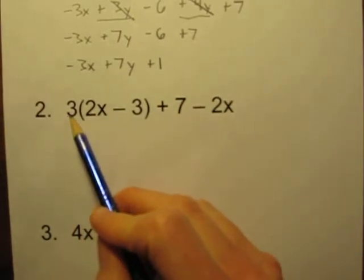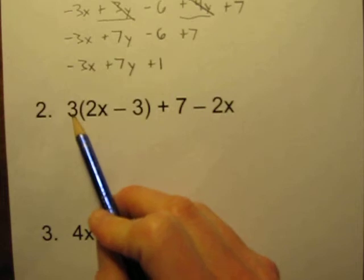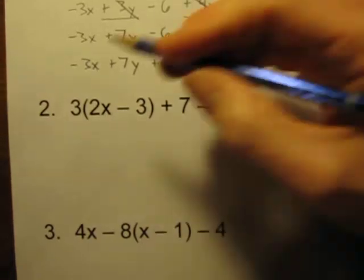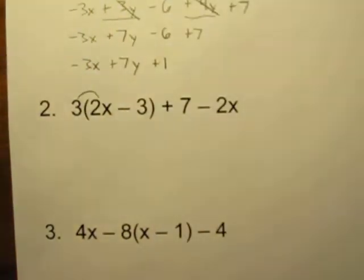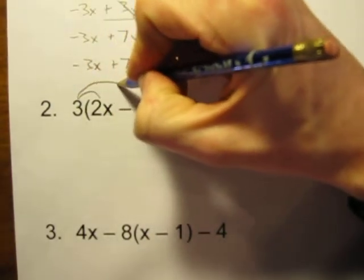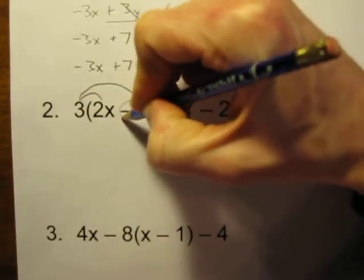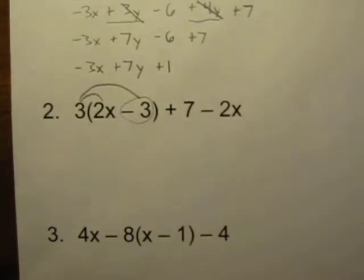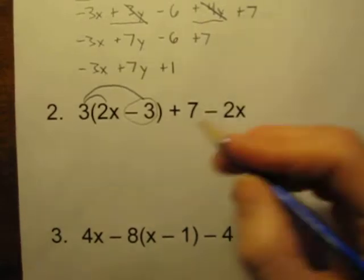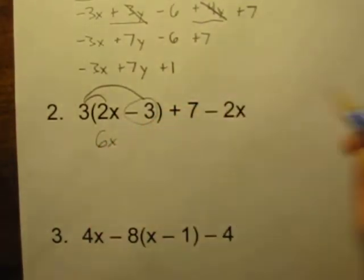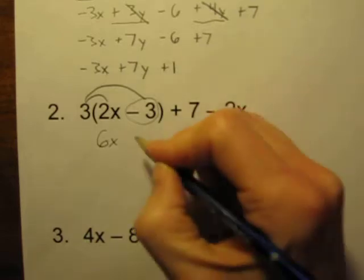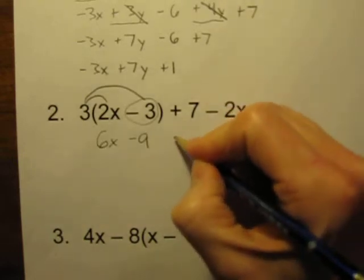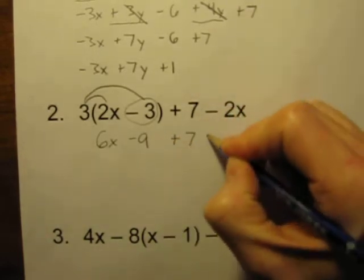What this really means here, this 3 with these parentheses, this means 3 times everything inside the parentheses. So this is really going to be 3 times 2x, and this is going to be 3 times this negative 3 term here. Don't forget that negative sign. 3 times 2x is 6x. 3 times negative 3 is negative 9. Let's now just rewrite what's left. Don't forget that plus 7 and the minus 2x.